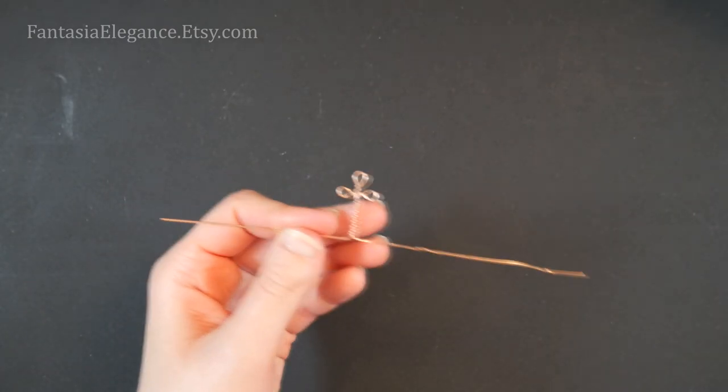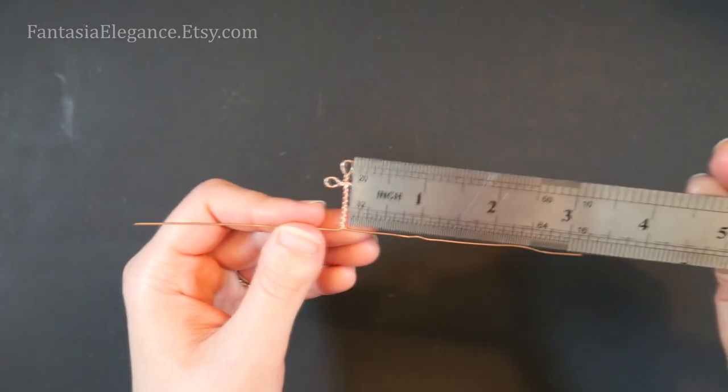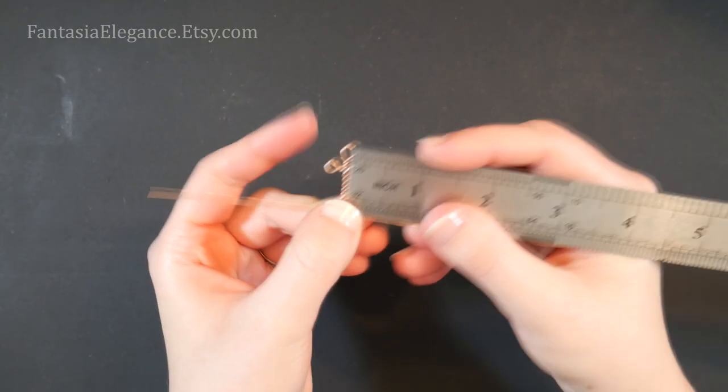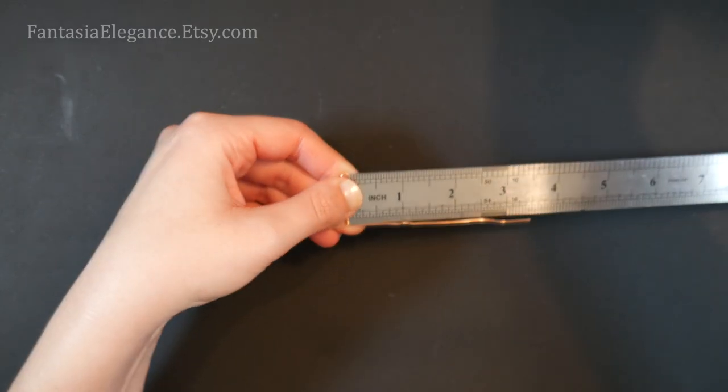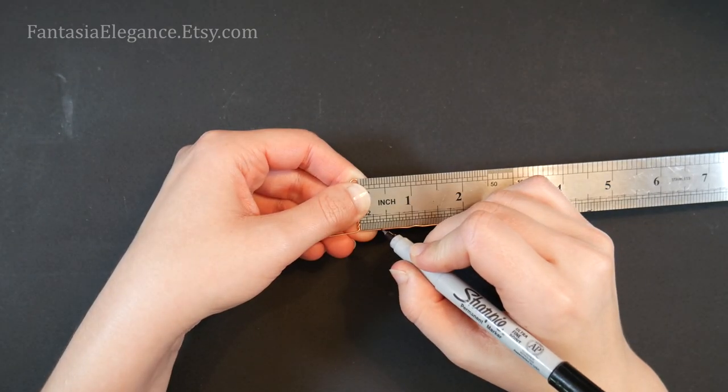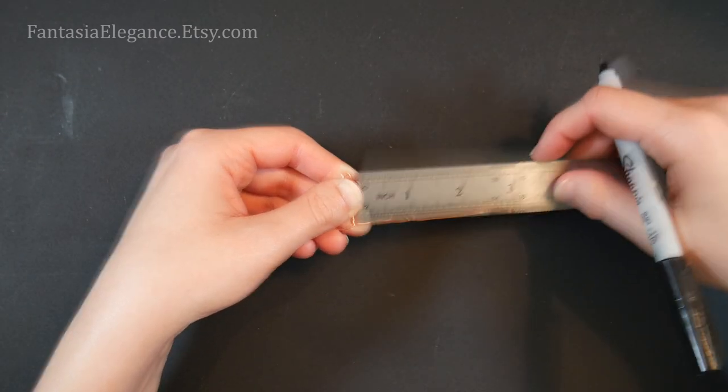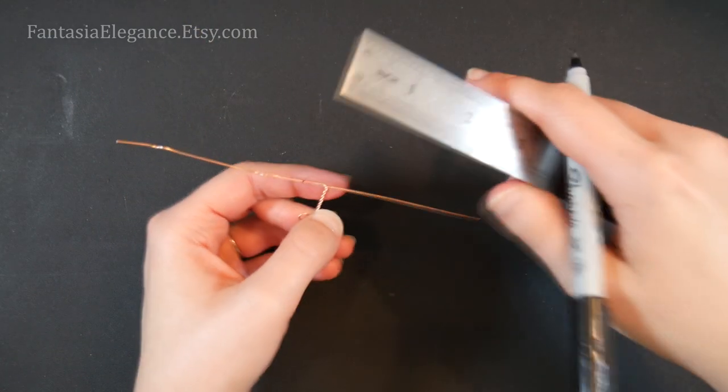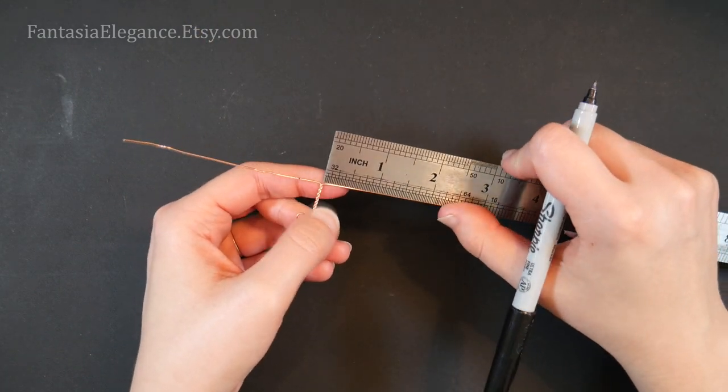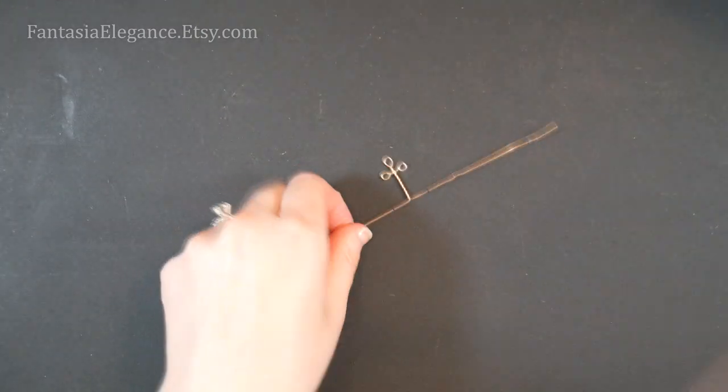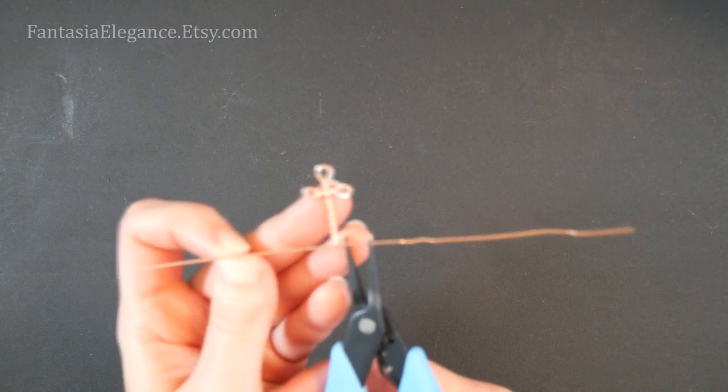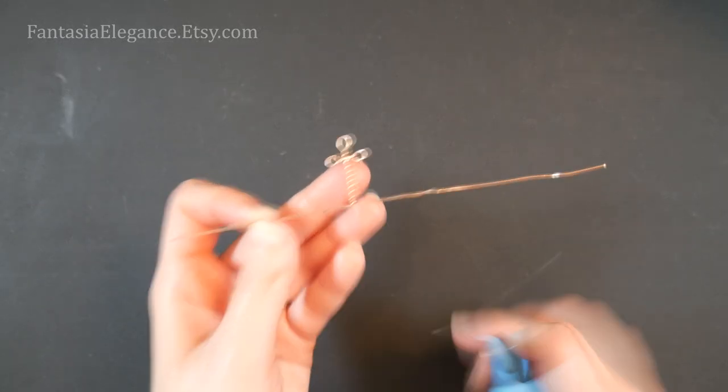To do that, what we're going to do is again pull out our ruler and you're going to measure about three eighths of an inch out from the center twist on either side. I'm just going to mark that with a little sharpie. So just about three eighths of an inch out, we'll do that on both sides, and that's going to tell us where to make our first bend.